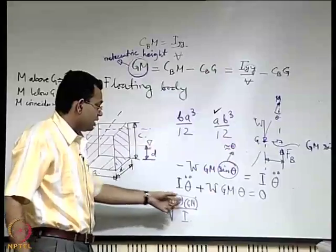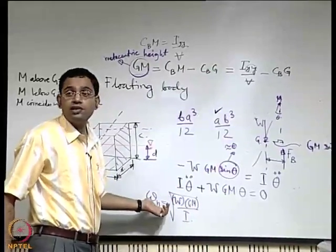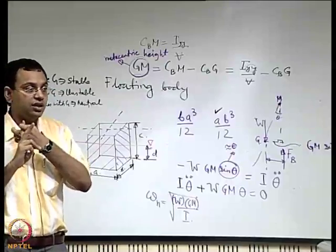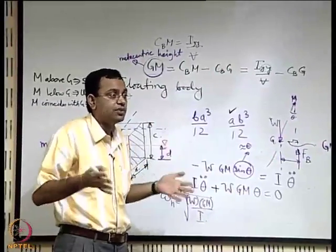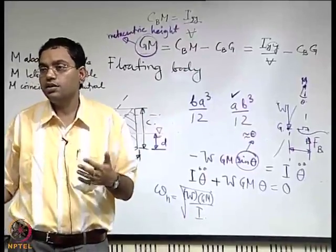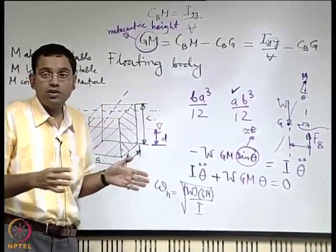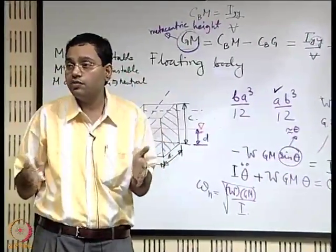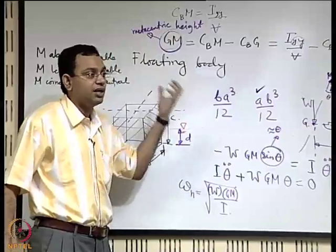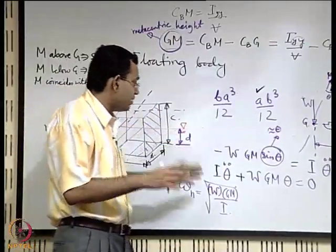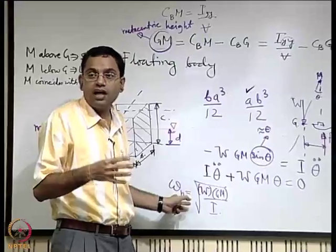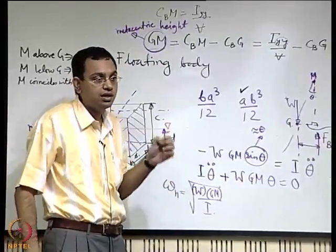Greater metacentric height means higher frequency of oscillation, making it more uncomfortable for passengers. These are two conflicting design requirements: greater metacentric height gives better stability but causes more rapid oscillation. For a critical application like a warship, stability is the priority over passenger comfort. So when designing a ship, stability (governed by the metacenter location relative to G) and passenger comfort (governed by oscillation frequency) are competing factors.